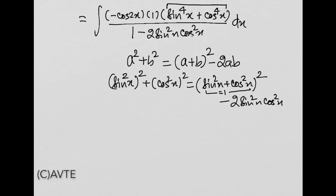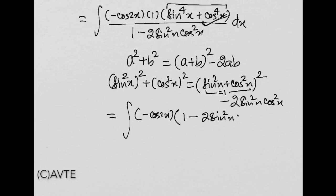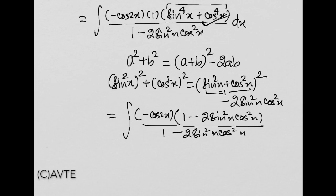और ये किसके equal हो जाएगा? ये 1 के equal हो जाएगा. तो वो पूरा expression simplify होकर बच जाएगा: 1 minus 2 sin²x cos²x. और नीचे हमारे पास है 1 minus 2 sin²x cos²x. अब आप समझ गए होंगे — ये पूरा expression cancel हो जाएगा. और minus cos 2x का integration होगा: minus sin 2x divided by 2 plus c.